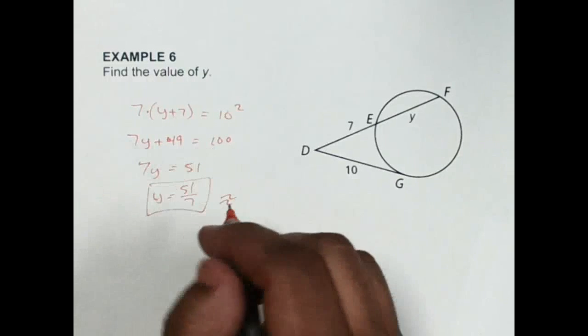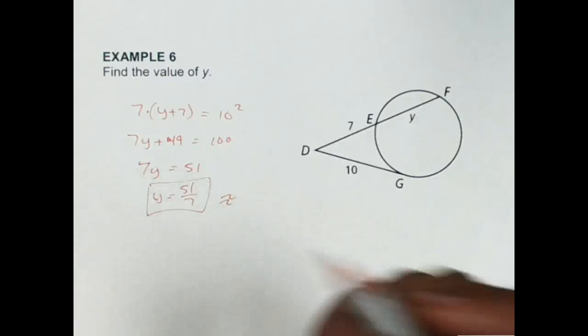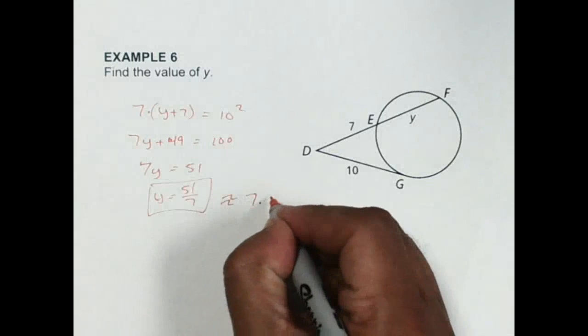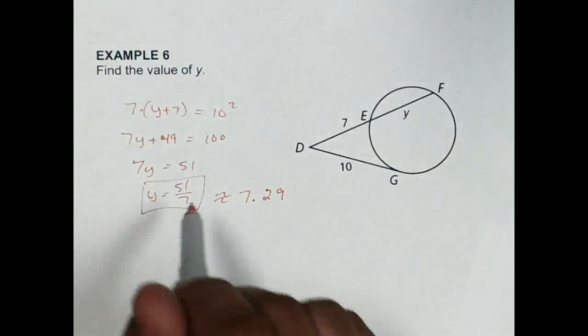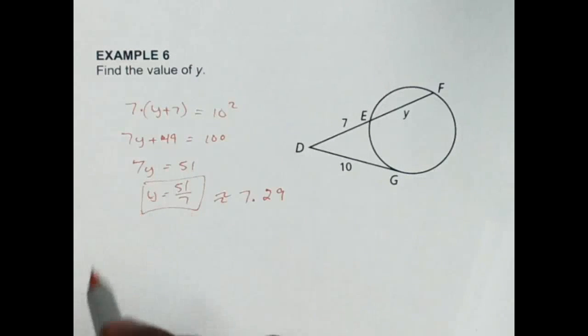In the event that I were to ask you to round, which I didn't, but just in case I did, you would round to, this would be about 7.29. Okay, but I didn't say to round, so I want exact answers, which would be this 51 over 7.